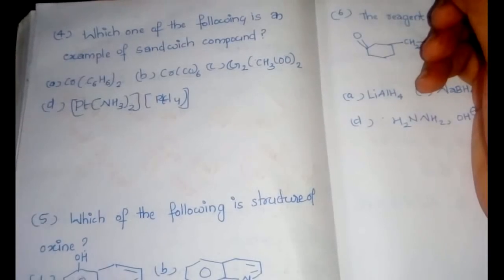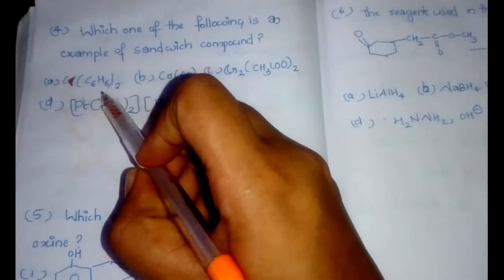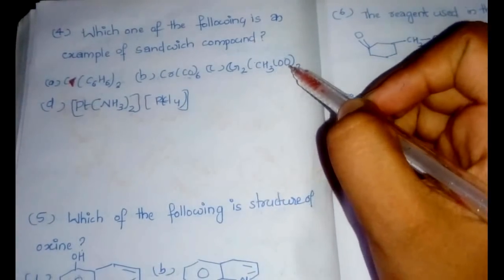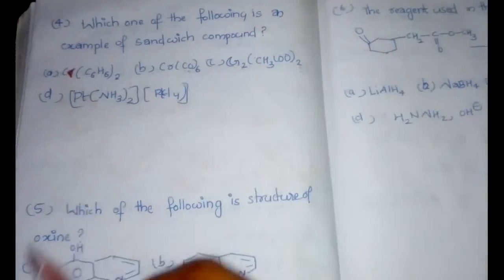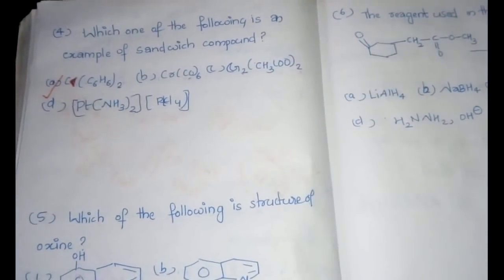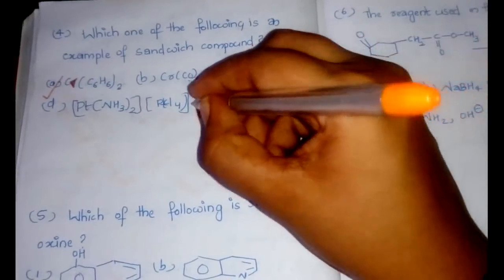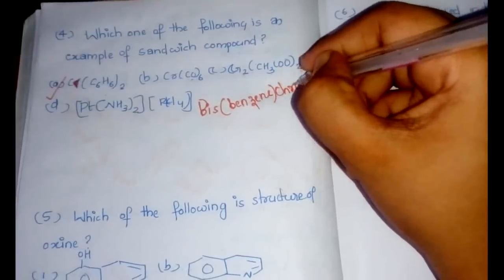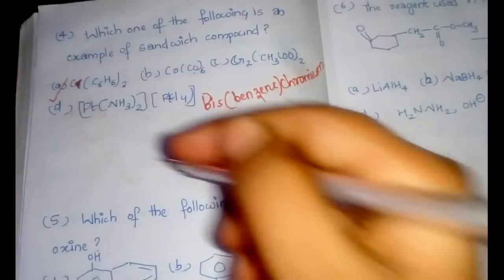The fourth question: which one of the following is an example of a sandwich compound? The options are Cr(C₆H₆)₂, Cr(CO)₆, Cr₂(CH₃CO₂)₂, and [Pt(NH₃)₂][PtCl₄]. Definitely our answer is option A: Cr(C₆H₆)₂. The name of this complex is bis(benzene)chromium.